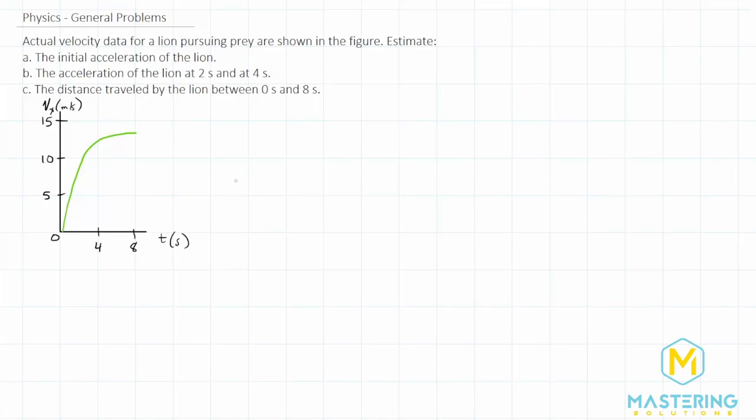Welcome to Mastering Solutions. In this general problem, they tell us that we have actual velocity data for a lion pursuing prey, and they show it in the figure right here.